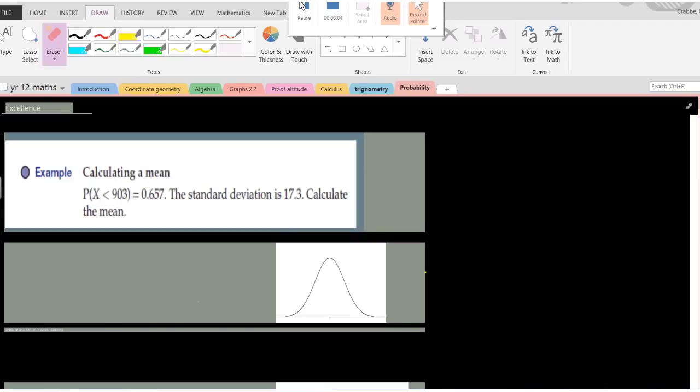We're going to do an example problem by calculating mean. When calculating mean, we're going to be given information like standard deviation and the entire statement, which is the probability that x is less than 903 is equal to 0.657.